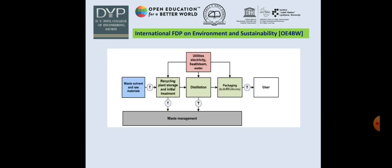There is a recycling process that involves: waste solvent and raw material, recycling plant storage and initial treatment, distillation, packing, and then use. During this process, there is utilization of electricity and heat or steam water. This constitutes waste management as the solvent is recycled.